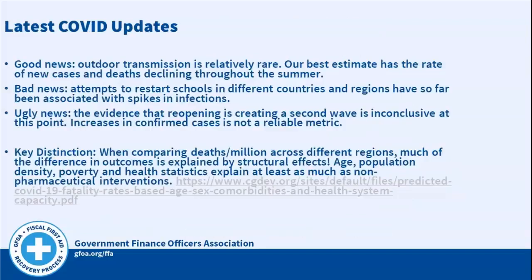Some conclusions: the good news is outdoor transmission is relatively rare, and the latest evidence from mass gatherings strongly points to that. Our best estimate has the rate of new cases and deaths declining throughout the summer. The bad news is that attempts to restart schools in different countries and regions have so far been associated with spikes in infections. I call the evidence that reopening is creating a second wave as inconclusive — there's a lot of opacity in terms of what works and what doesn't in reopening the economy.